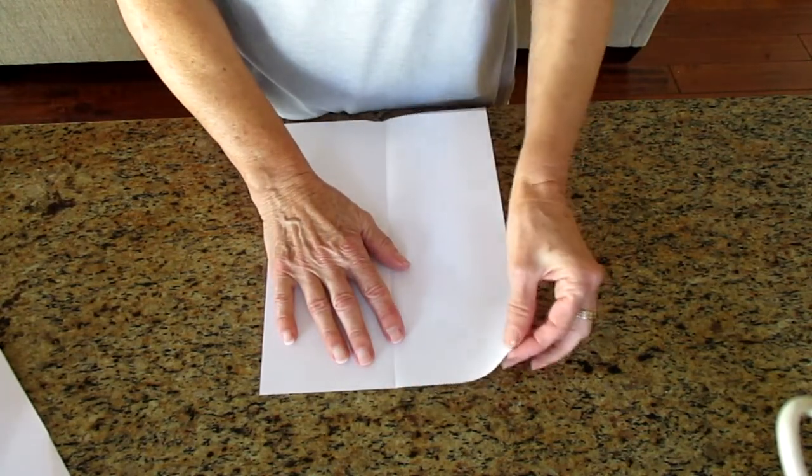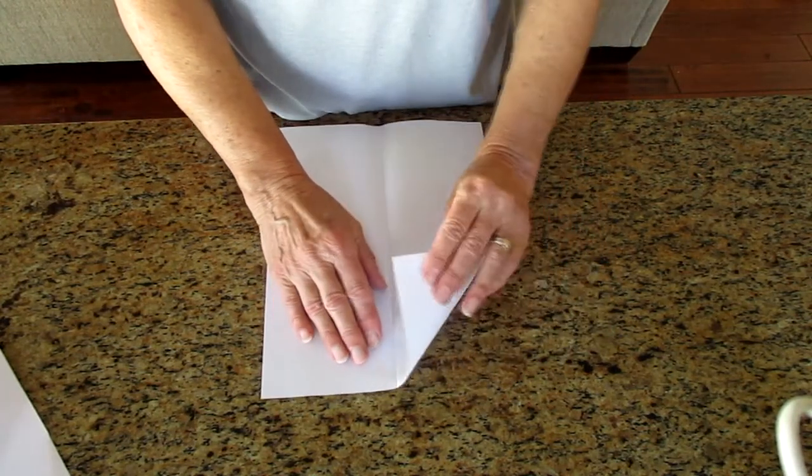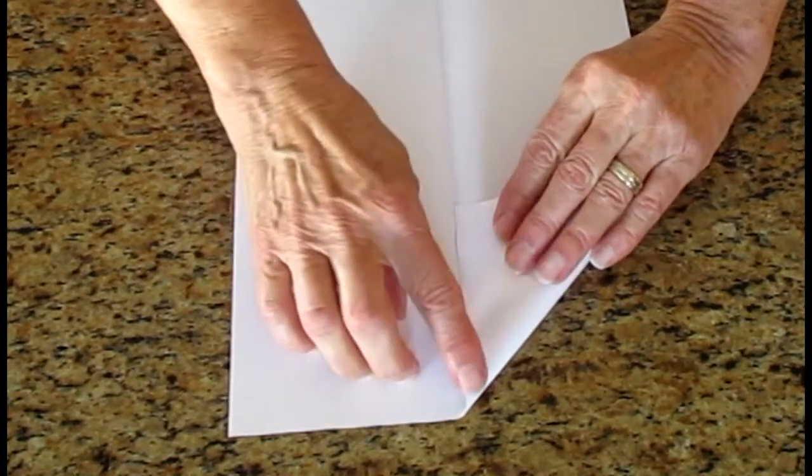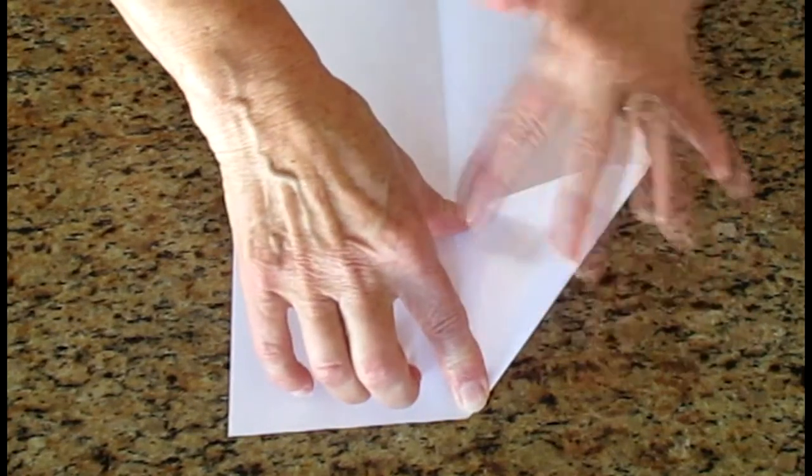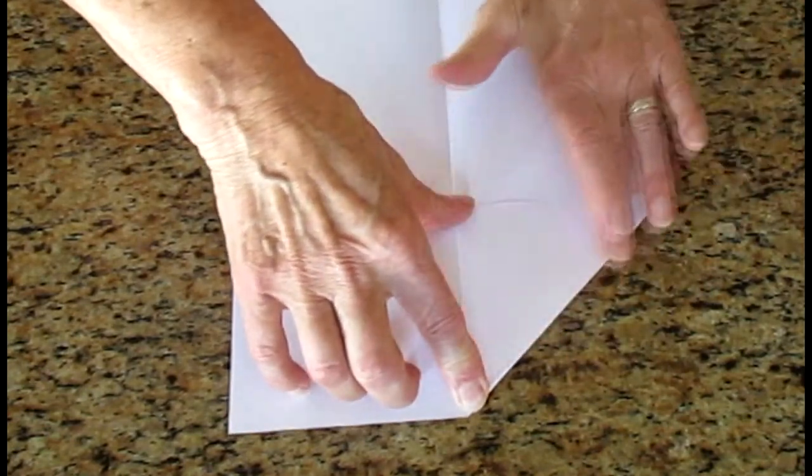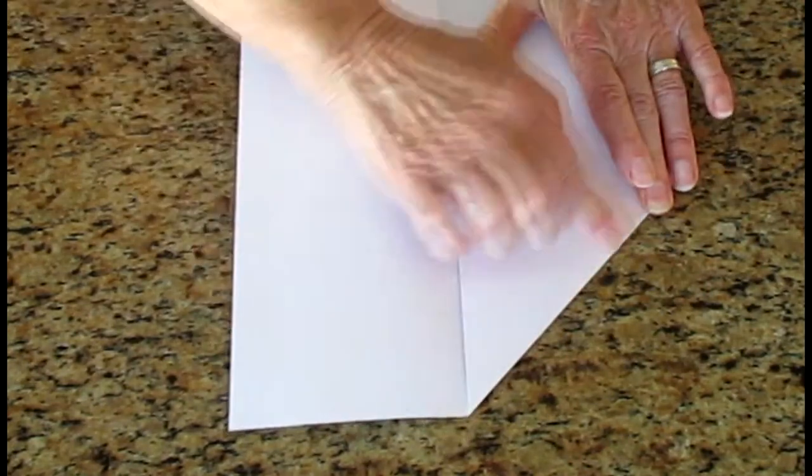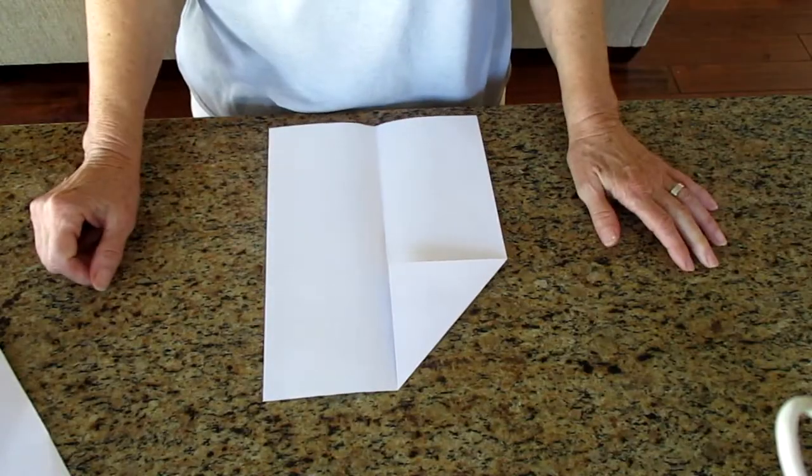So right now I'm going to take this corner up here and fold it to the middle. Make sure that there's a point up here. Hold it with these two fingers and flatten it with this. Again nice sharp fold.